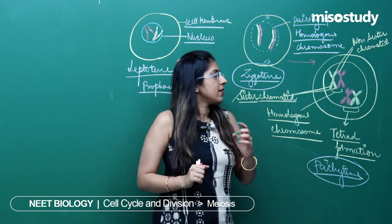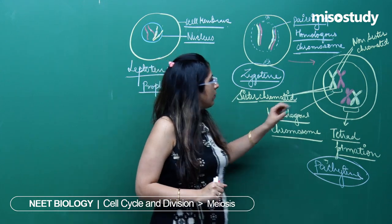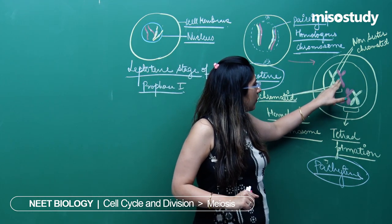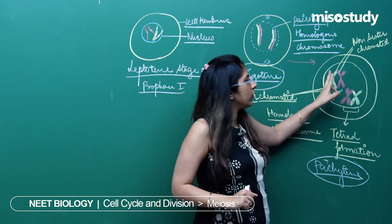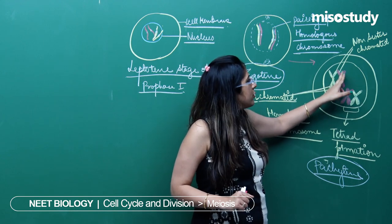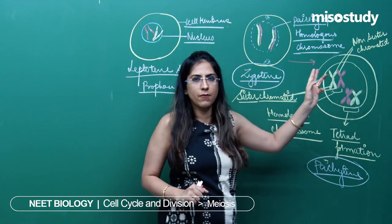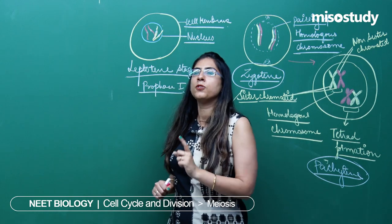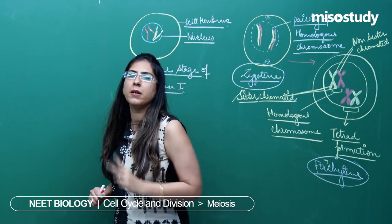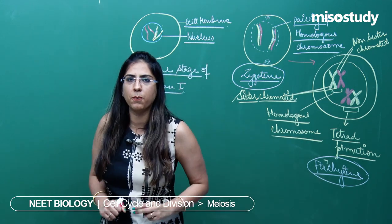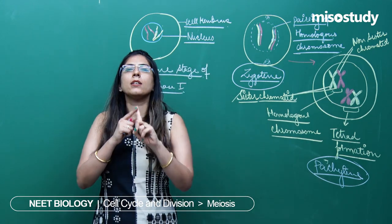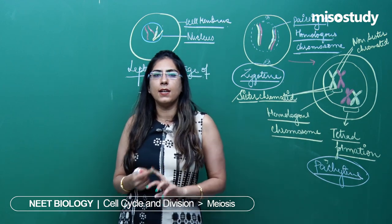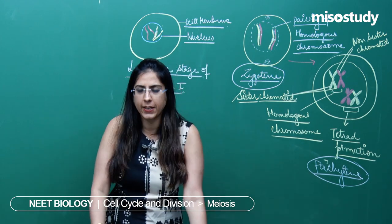One part of this chromosome will cut from here, it will cut from here, it will join over there and vice versa will occur. This occurs because of two enzymes which are very important: one is called endonuclease and another is called ligase.